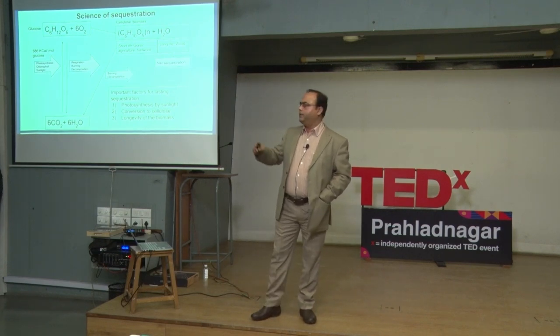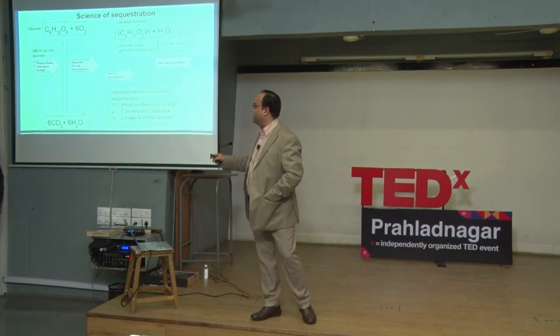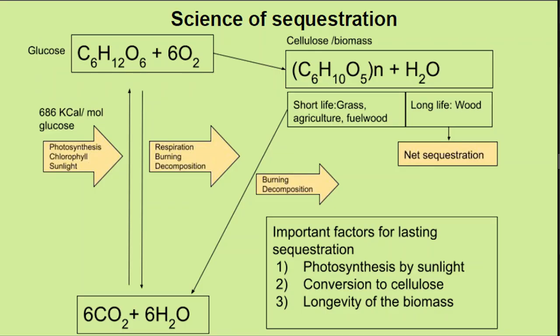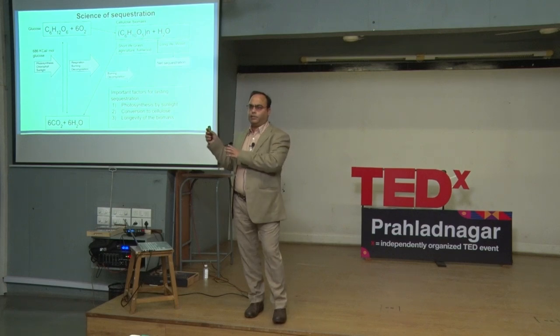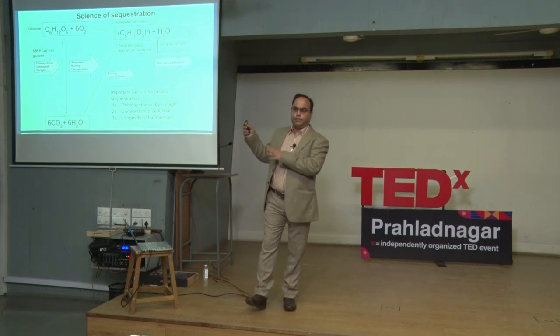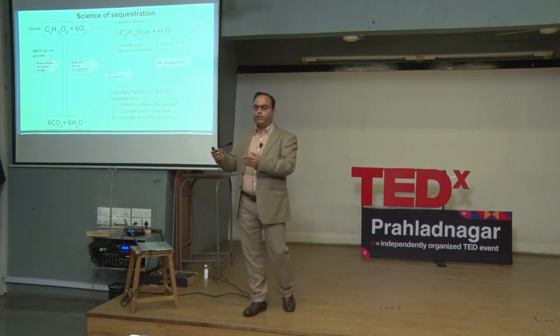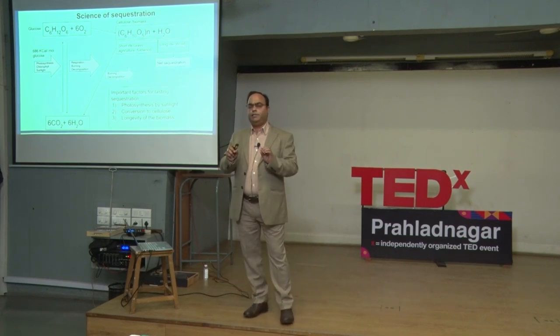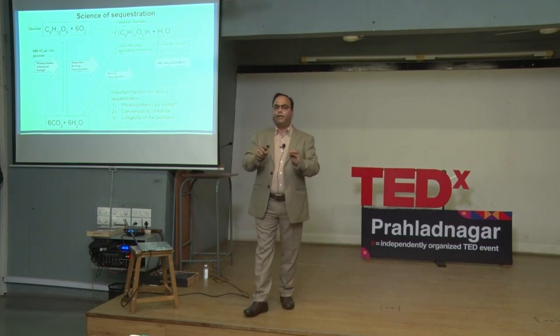There is another process going in reverse, in which glucose is consumed and we give out CO2 and water. While we are talking, every person here is doing this — the second equation: consuming glucose and giving out CO2. This is constantly being done by each and every living being, whether plant or animal.